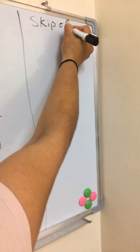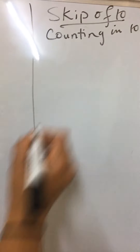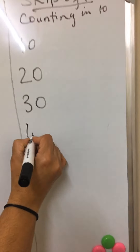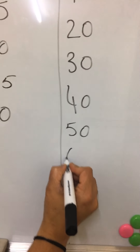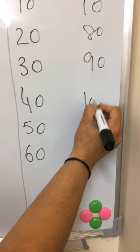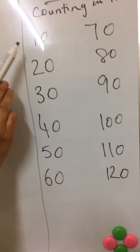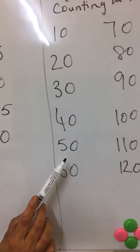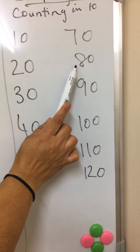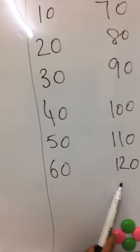Now we are going to do skip of ten, that means counting in ten. Ten, twenty, thirty, forty, fifty, sixty, seventy, eighty, ninety, one hundred, one hundred ten, one hundred twenty.